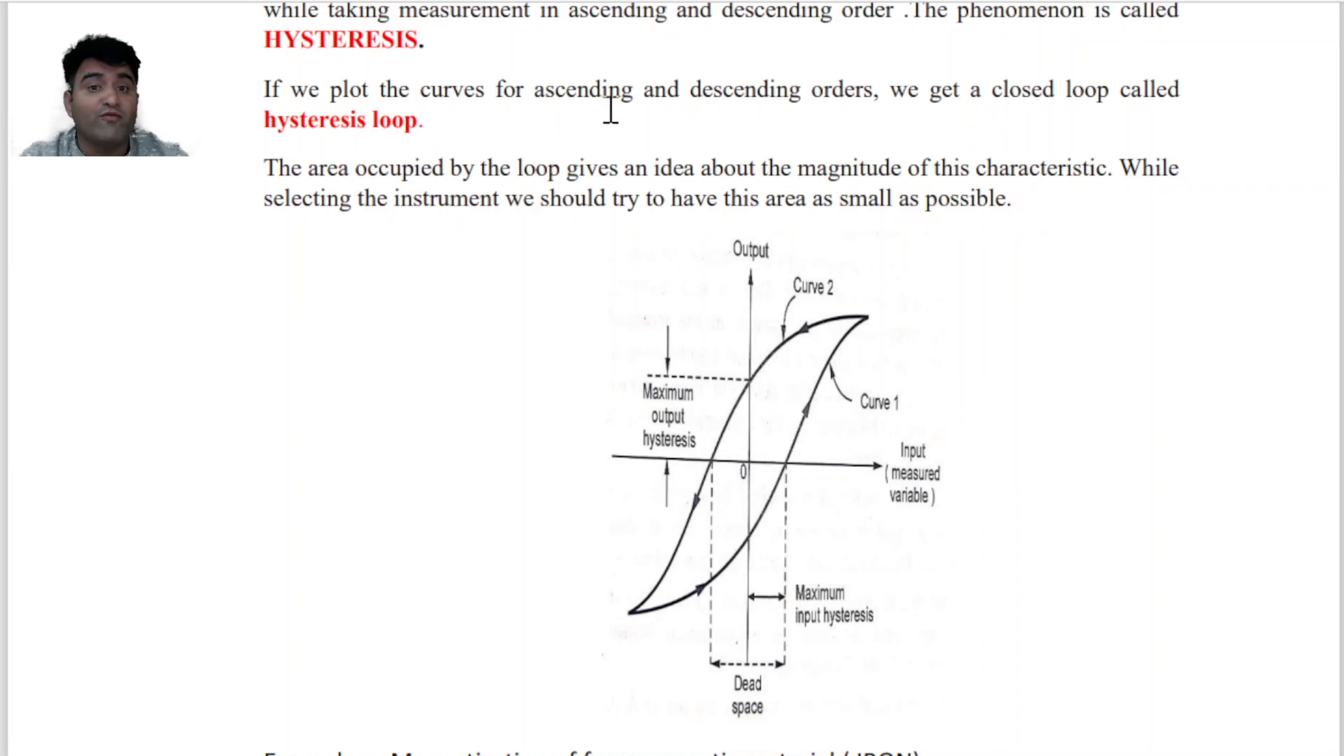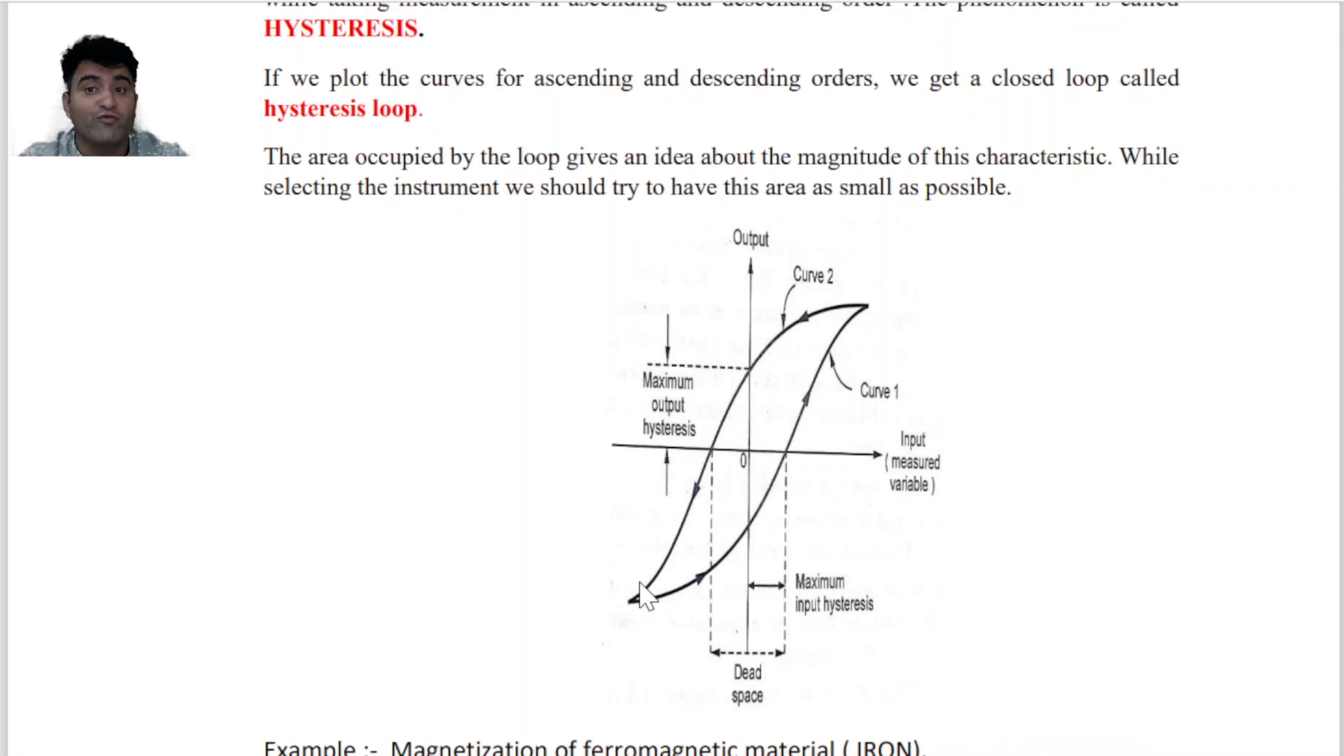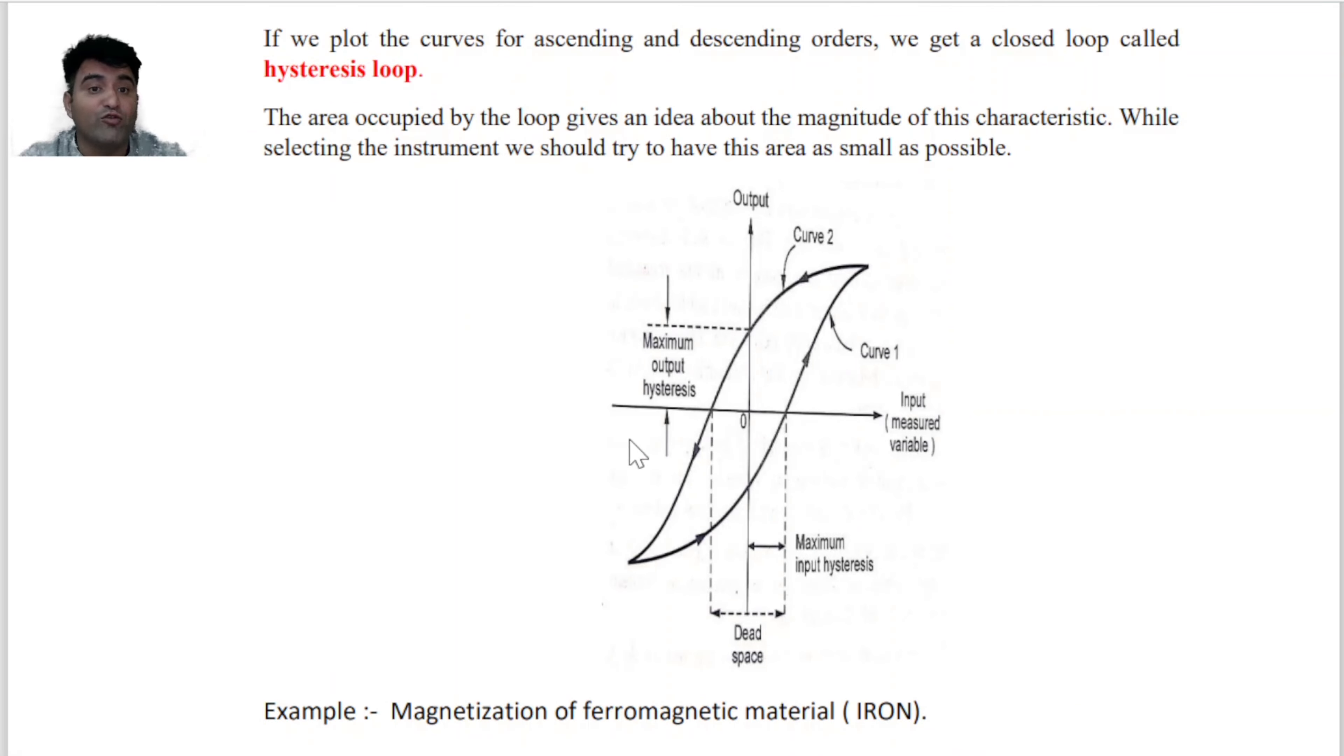If we plot a curve for ascending and descending order, we get a closed loop called hysteresis loop. The area occupied by the loop gives an idea about the magnitude of this characteristic. While selecting the instrument, we should try to have this area as small as possible.